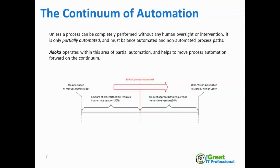On the left side of the continuum, zero percent automation would be something a human does entirely from end to end — manual human labor. At the other end, you have a process so well understood that technology handles it entirely from end to end, including when things go proverbially wrong or don't follow the happy path. The technology can handle every alternative path a process could generate. That would be considered true automation — zero human effort — and that's still pretty rare today.